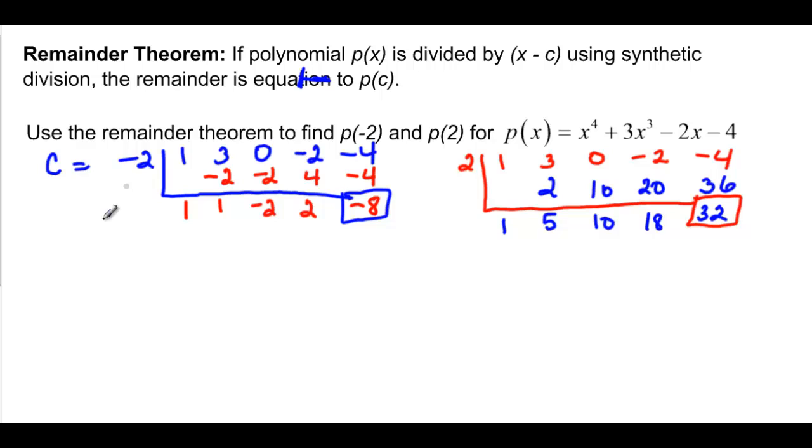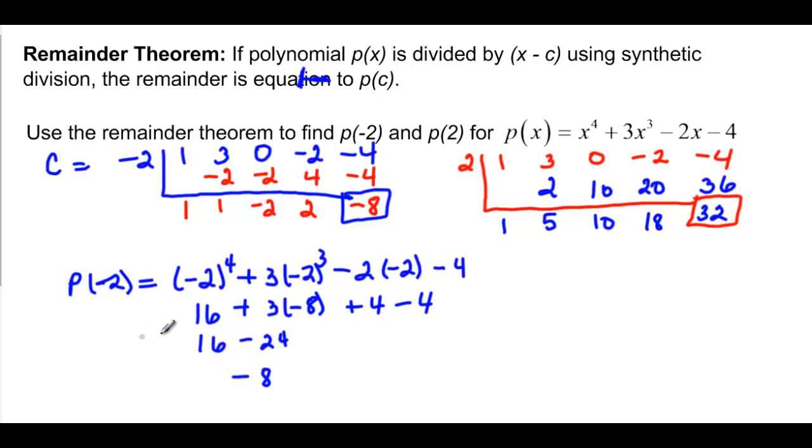Let's do this first one. So we have P of negative 2, and that says that we have negative 2 to the 4th. That's going to be 16. Plus 3 times negative 2 cubed, which is really plus 3 times negative 8. And then minus 2 times negative 2, which we can say is plus 4, and then minus 4. So these two cancel each other out. We really just have negative 8, so it really does work.